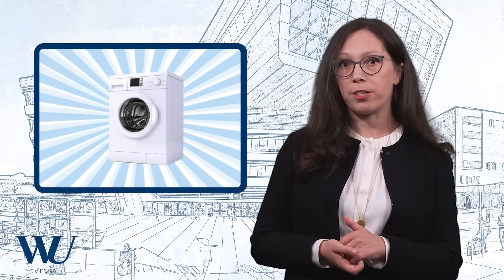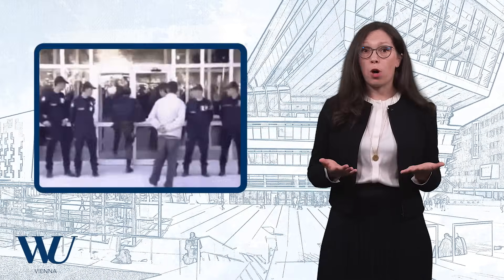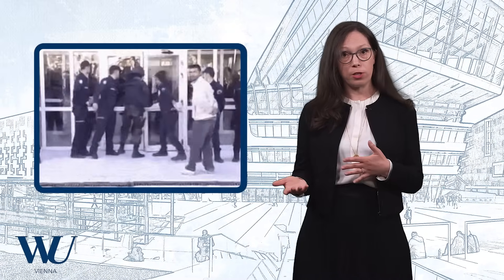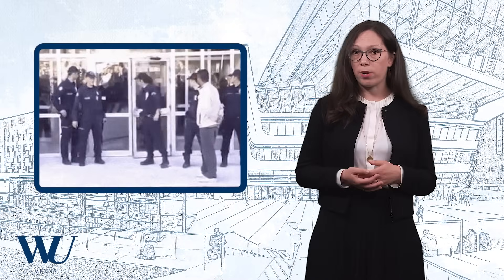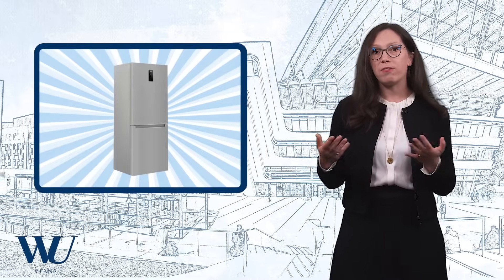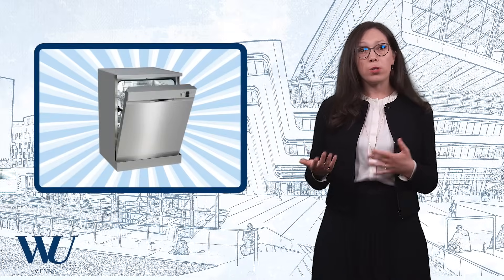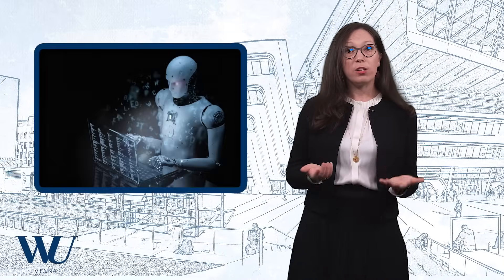Our results showed that there was one washing machine manufacturer in particular where all retailers had a uniform price and where the coefficient of variation was extremely low. This could be an indication of RPM and a reason for competition authorities to take a closer look, for example through a dawn raid. We are now applying our framework to other products like fridges and dishwashers, and also applying machine learning to make the process easier to handle for competition authorities and consumer organisations.